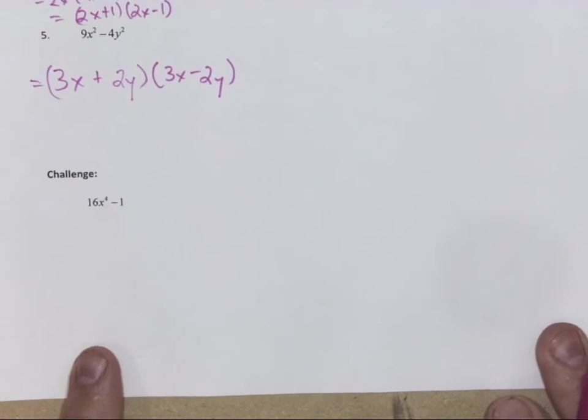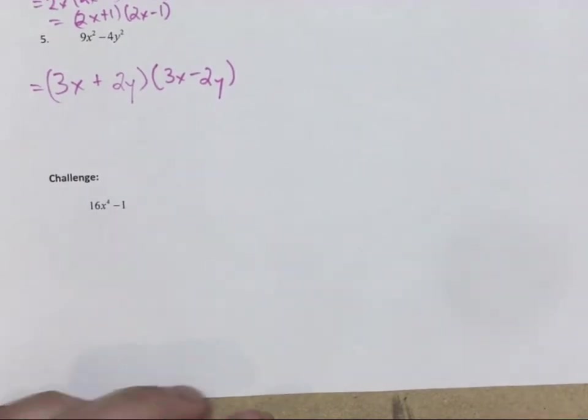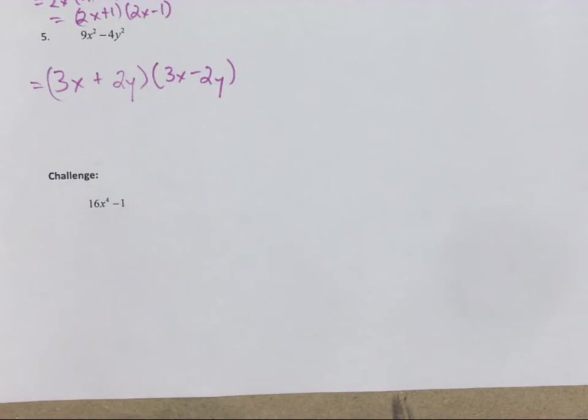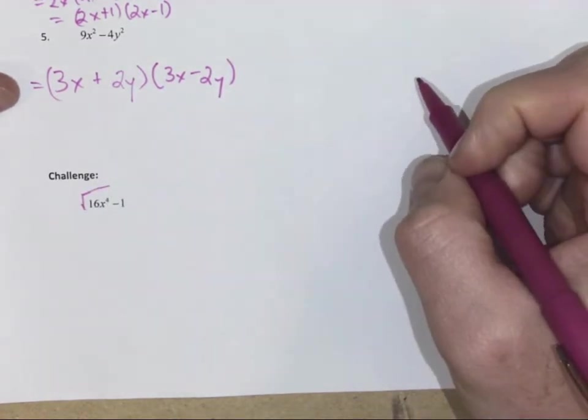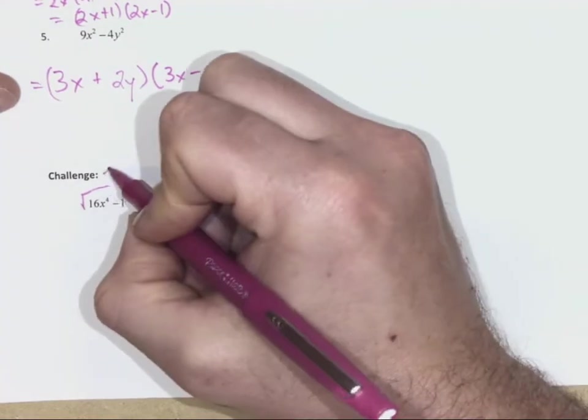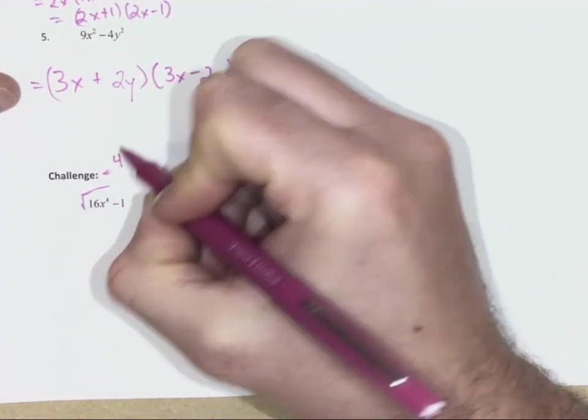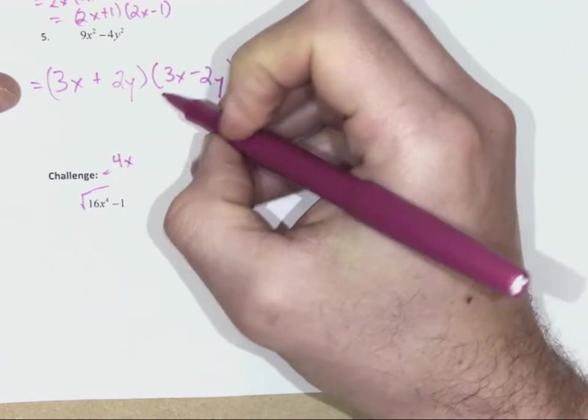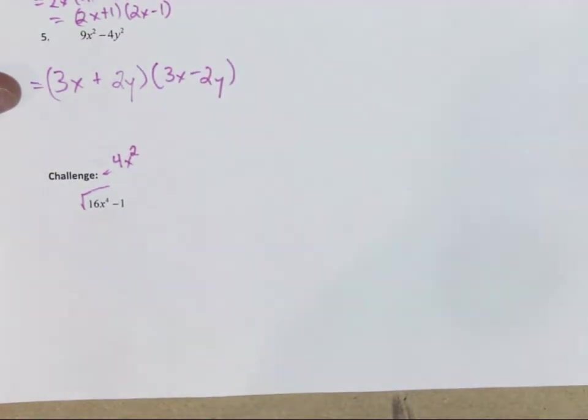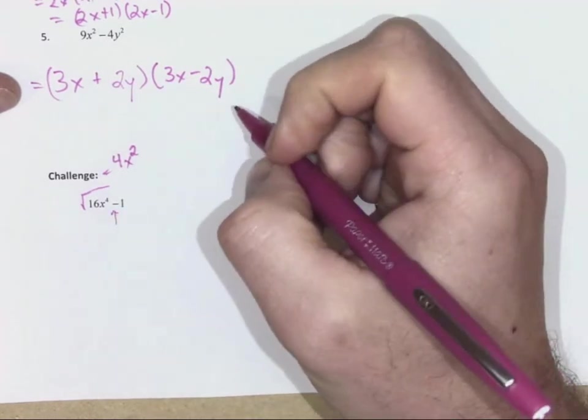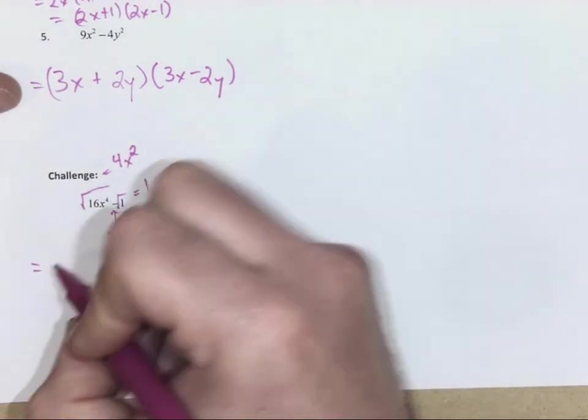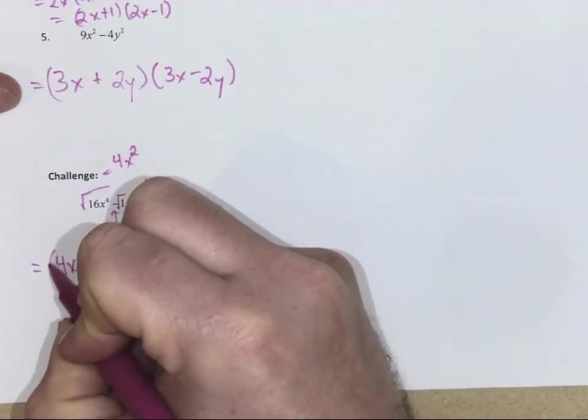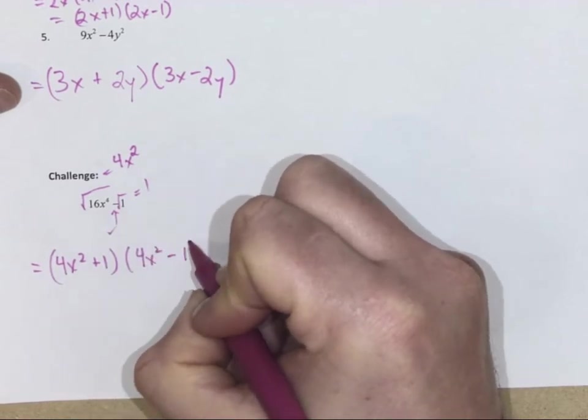One last example, a challenge. Same thing. I'm going to color coordinate this one just so that we can see eventually. Can I take the square root of 16? 4x exponent 4? Again, square root of 16, it's going to be 4, x exponent 4 divided by 2 is x exponent 2. There's a negative, so it follows that pattern. Can I take the square root of 1? It's 1. So that means I'm going to have 4x squared plus 1 in brackets and 4x squared minus 1 in brackets.